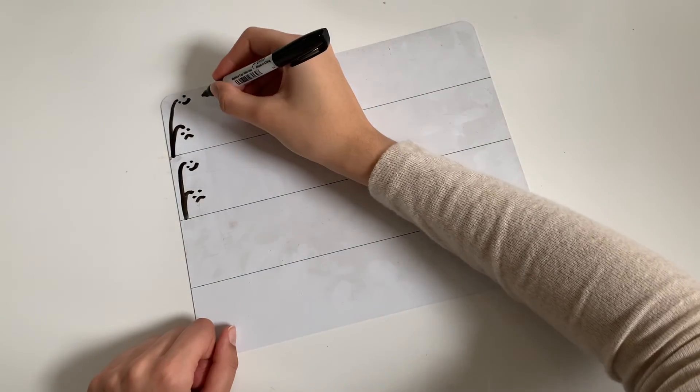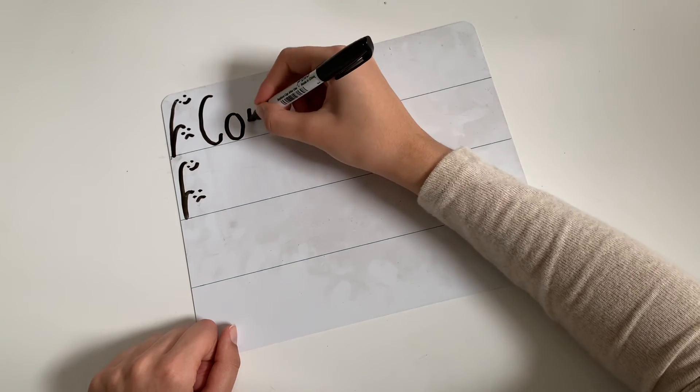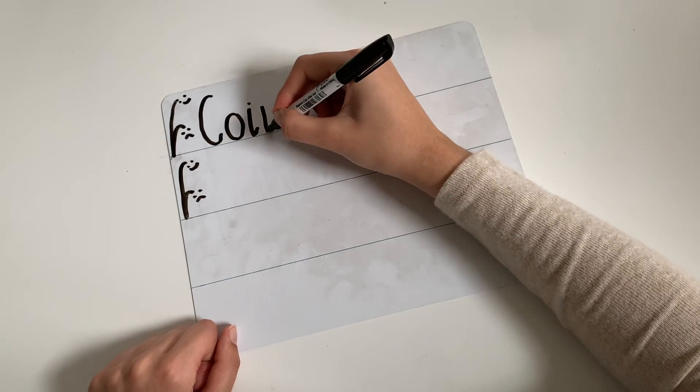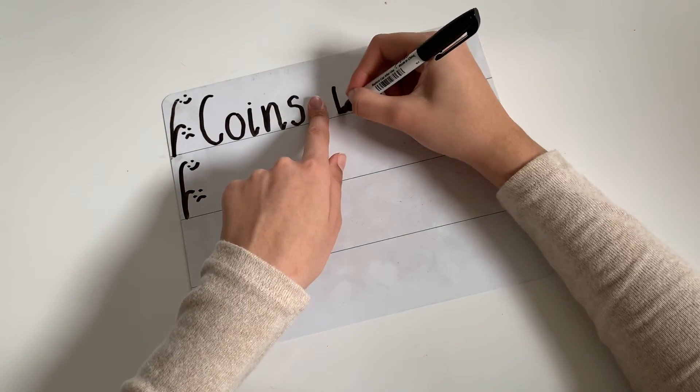It's at the start of my sentence, so I'm going to use a capital letter. I'm coming to the end of my words. I'm going to need to use a finger space in between.